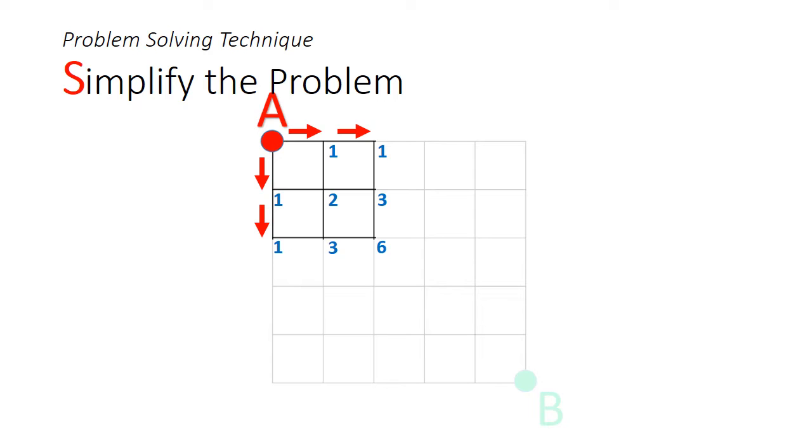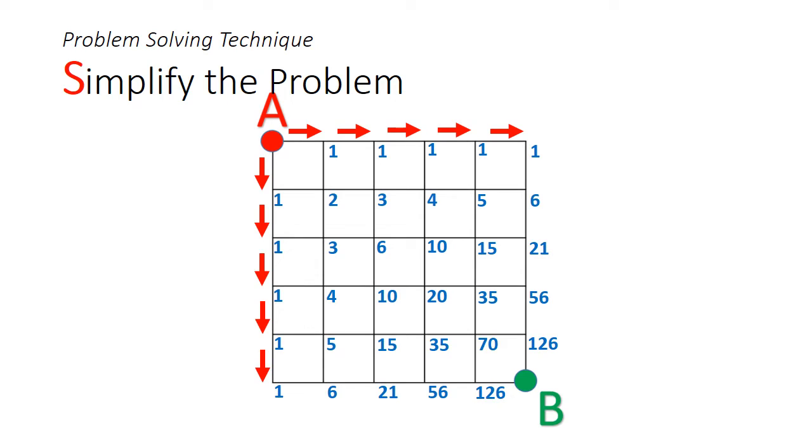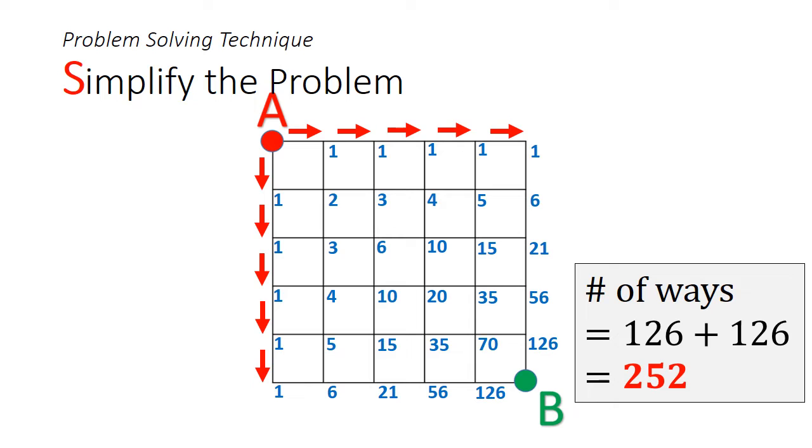After you have detected this pattern, the tedious part here is to fill up the entire 6x6 grid. Using this algorithm, you can find that the total number of ways to get from point A to point B is 252.